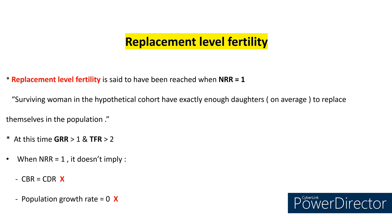It is an important concept. Whenever we say we have reached replacement level fertility, that means net reproduction rate is equal to 1, or surviving women in the hypothetical cohort have exactly enough daughters to replace themselves in the population. At this time of replacement level fertility, GRR will be more than 1 and TFR will be more than 2. And whenever we say net reproduction rate is equal to 1, it does not imply that crude birth rate and crude death rate are equal, and also population growth is not necessarily equal to 0. So this is very important.